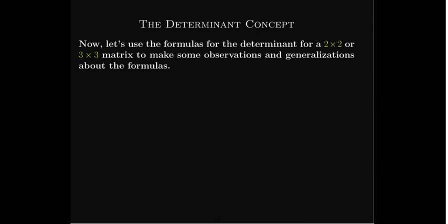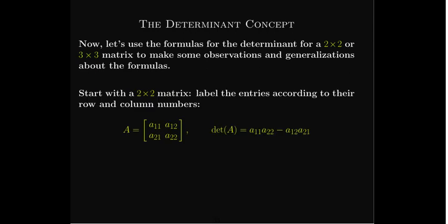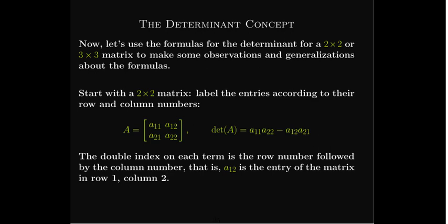Now let's look at these formulas, starting with the 2×2 matrix, and see if we can observe patterns that might lead us to a general determinant formula. We relabel the entries according to their row and column numbers using two subscripts: the first subscript gives the row number and the second gives the column number. So a₁₂ is in the first row, second column. The formula for the determinant would be a₁₁ times a₂₂ minus a₁₂ times a₂₁.